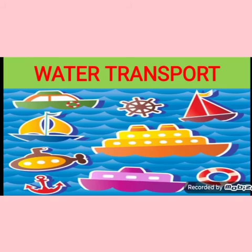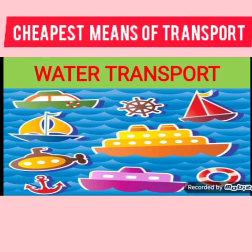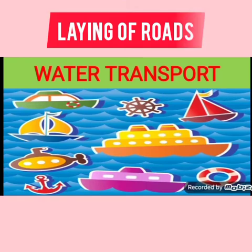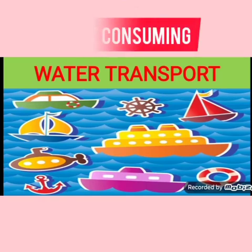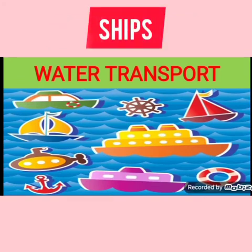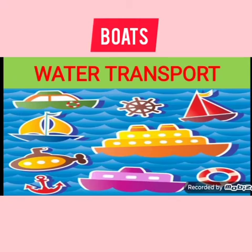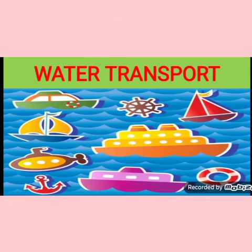Now let's discuss about water transport. Water transport is the cheapest means of transport. It does not need the laying of roads. It is cheap but time consuming. Ships can carry heavy goods from one place to another and from one country to another. Boats are rowed by oars, whereas steamers, ships, and motor boats have engines. So ships, steamers, and boats are means of water transport.